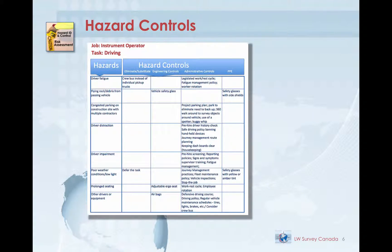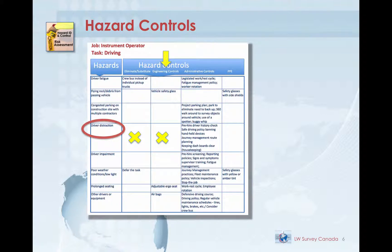Let's identify effective controls to reduce the possibility that our instrument operator might drive while distracted. When choosing hazard controls, we're required to first look at eliminating the hazard. Since driving is an essential function of the instrument operator's job, we can't eliminate the hazard entirely. So our next step is to look at engineering controls. Since engineering controls do not yet exist to protect against the hazard of distracted driving, we need to identify a method to reduce the hazard. We're left with administrative controls, and because so many factors make up driving hazards, we'll use more than one administrative control.